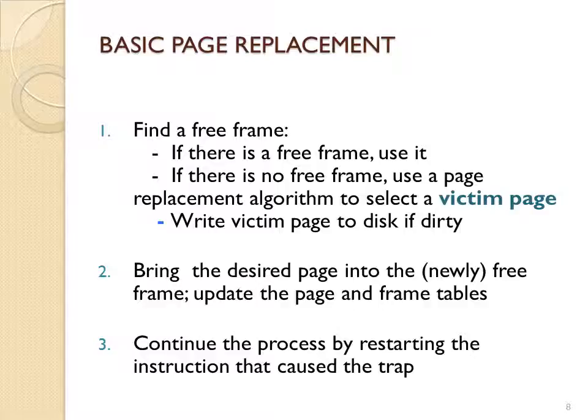Here are the steps for handling a page fault: you find a free frame — if you have one, you use it; if you have no free frame, you need to select a victim page to be replaced. On your page table you have a valid bit and a modified bit, also called a dirty bit. The modified bit indicates whether the page was modified while it was in a frame. If it has been modified, you must write the modified information back to disk, so that the next time you use that page you use the modified version and not the original unmodified one.